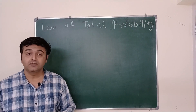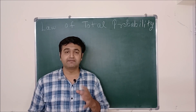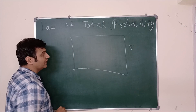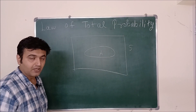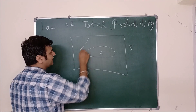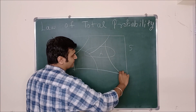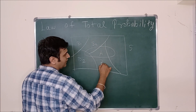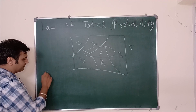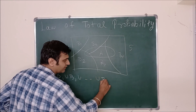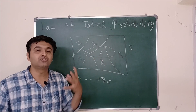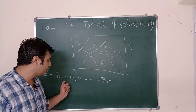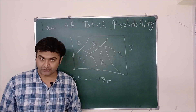Today we are going to talk about the Law of Total Probability. First I will explain the concept and then we will jump towards the examples. The concept is very simple: you have a sample space S for some random experiment and you divide it into a disjoint union of sets B1, B2, B3, B4, B5. Their intersection is empty — they are mutually exclusive — and since their union completes the whole sample space, these B's are called mutually exhaustive events.